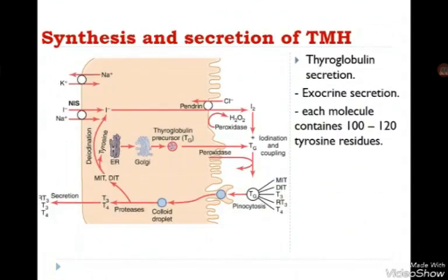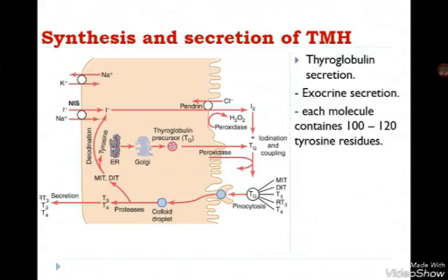The second step is the synthesis of thyroglobulin. Thyroglobulin is a protein, so it is synthesized in the endoplasmic reticulum, then sent to the Golgi apparatus and secreted outside the cells. An important note is that thyroglobulin is considered an exocrine secretion because it is released into the lumen attached to the gland without reaching the bloodstream.